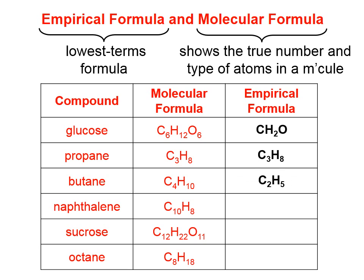The empirical formula for butane is C2H5. The empirical formula for naphthalene, which is the active ingredient in mothballs, is C5H4.